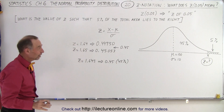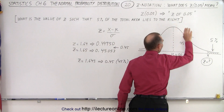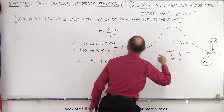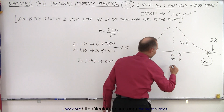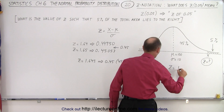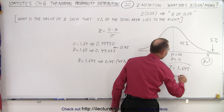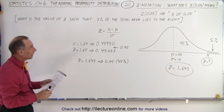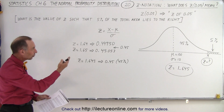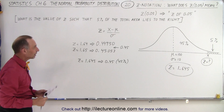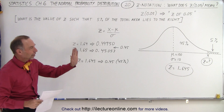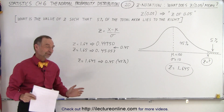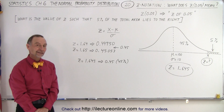Strange enough, when they say Z of 0.05, they mean the area to the right. That means the area between the mean and that point is 45%. We look up the Z value, and so we can say that Z is equal to 1.645. That is how we find the correct Z value. It all goes by definition and how it's notated — it's defined as the 5% to the right of the value of X, giving us a Z value corresponding to the remainder of the 50%, which is in this case the 45%.